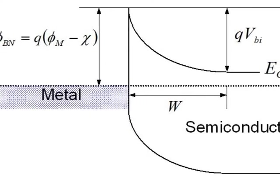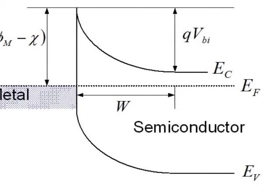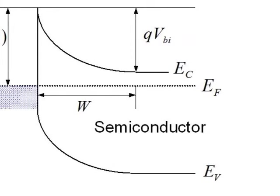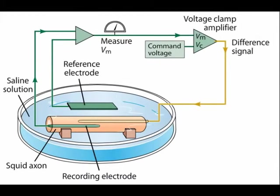In a Schottky diode, a semiconductor-metal junction is formed between a semiconductor and a metal, thus creating a Schottky barrier. Schottky diodes are useful in voltage clamping applications and prevention of transistor saturation.